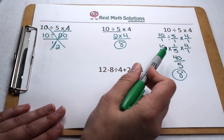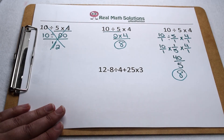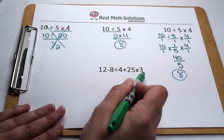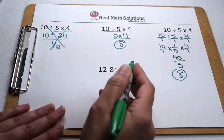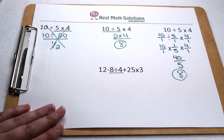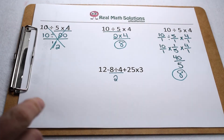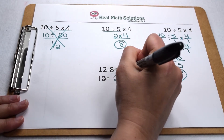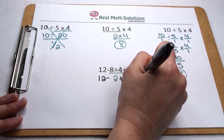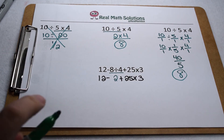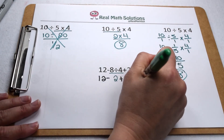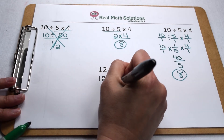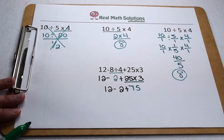This is why when we have multiplying and dividing, we need to work from left to right. Keeping that in mind, let's go back to our original problem and work our multiplication and division from left to right. The first thing we come upon is 8 divided by 4. 8 divided by 4 is 2, and we can bring down the rest of our problem: 12 minus 2 plus 25 times 3. Now we work the multiplication: 25 times 3 is 75, so our problem is down to 12 minus 2 plus 75.